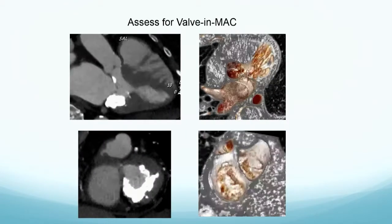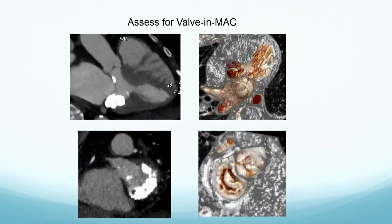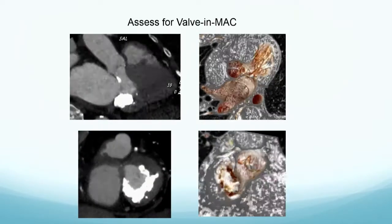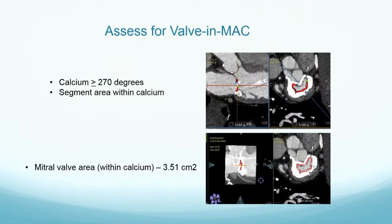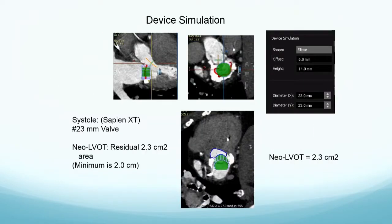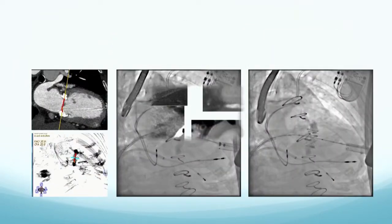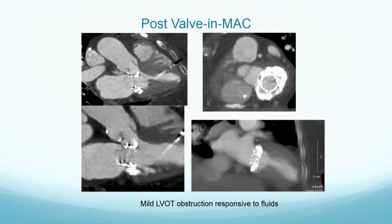What about valve-in-MAC? There are a lot of sophisticated ways of doing this. When you look at valve-in-MAC, there's not a regular place for landing, and you can see multiple ways of physically looking at it in motion. You'd like to have calcium at least 270 degrees, and you want it to be anterior. We obtained a perimeter area which would fit a 23 Sapien XT valve, placed the valve in, and looked at the neo-LVOT. The valve is spherical and the area is not, so you want to oversize. We predicted a residual area of 2.3 centimeters squared, with a 2 centimeter squared LVOT area as our goal. The valve is placed and the patient comes back with minimal LVOT obstruction that's responsive to fluids.